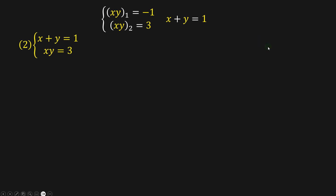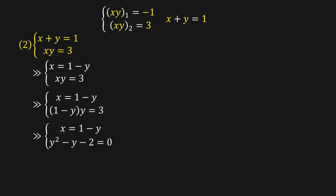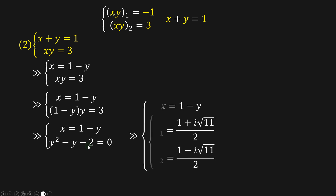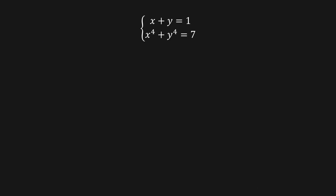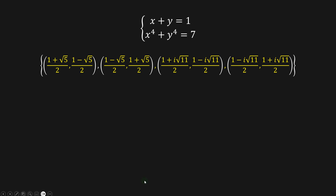Now let's go to the second system. Making the same substitution, we end up with a quadratic equation, and solving it gives imaginary solutions for y1. Replacing these imaginary solutions back, we get x3, x4, y3, and y4. So for this problem, the solutions are these: the pairs x1, y1 and x2, y2 as real solutions, and x3, y3 and x4, y4 as complex solutions.